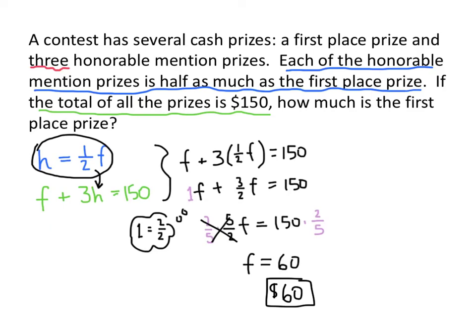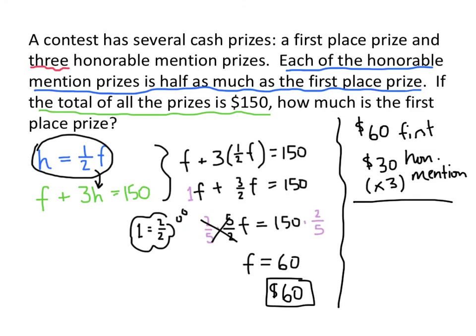Now we can check our answer just to make sure, and this is also a good idea when we're working on word problems, is to make sure that our answer actually makes sense. So if our first place prize is $60, what are our honorable mention prizes? Well, our honorable mention prizes were half as much, and so that means that those would be $30. But there was also three of them. So what would the total of that be? Well, we have $60 plus 3 times 30, which is 90, and 60 plus 90 is 150. And that's what we were told the total should be, so that checks our answer.